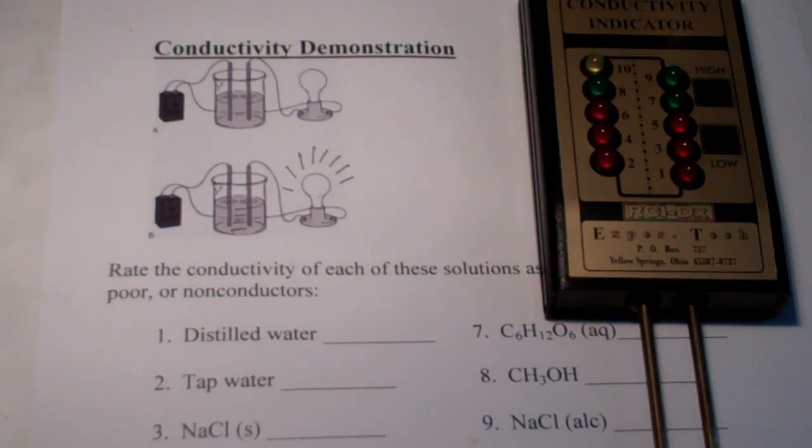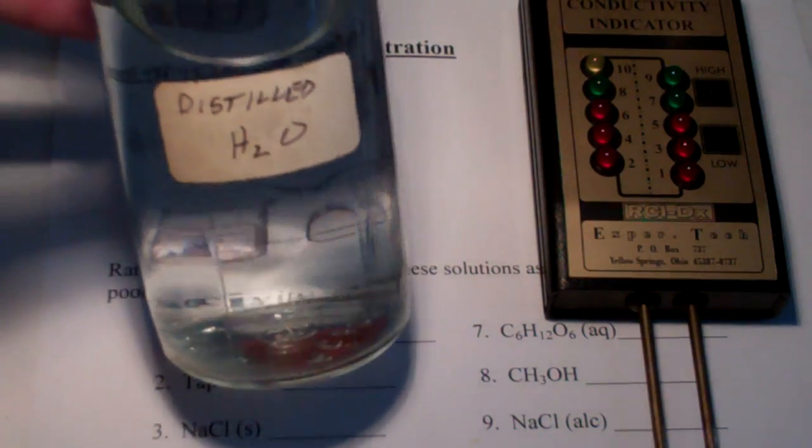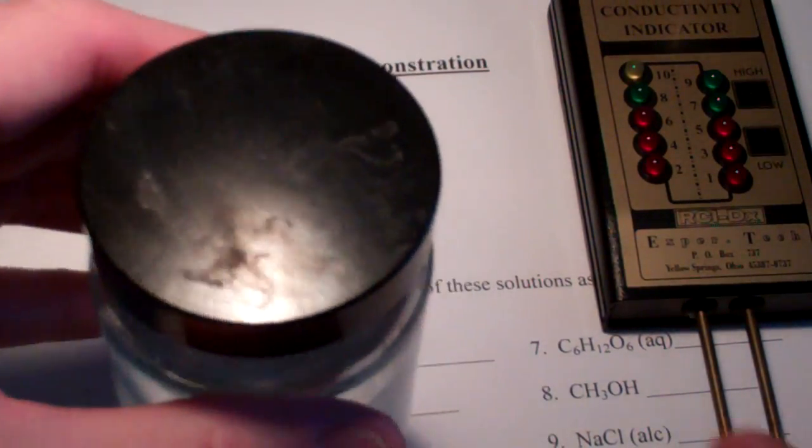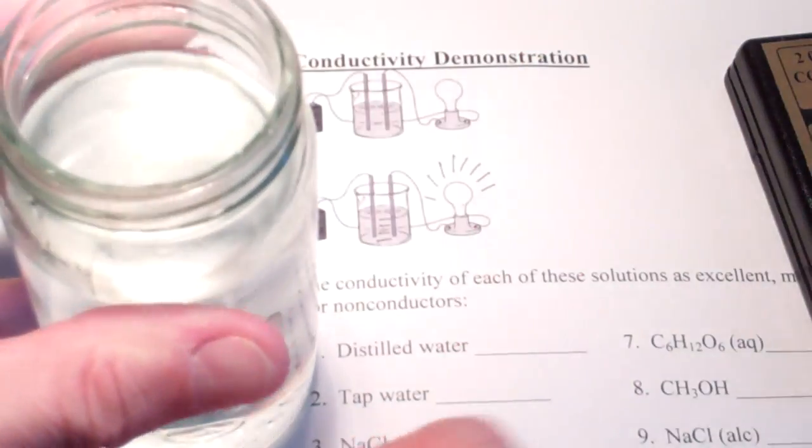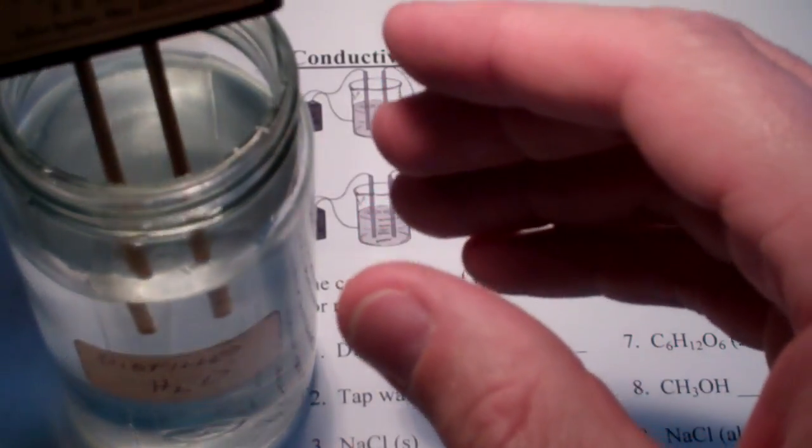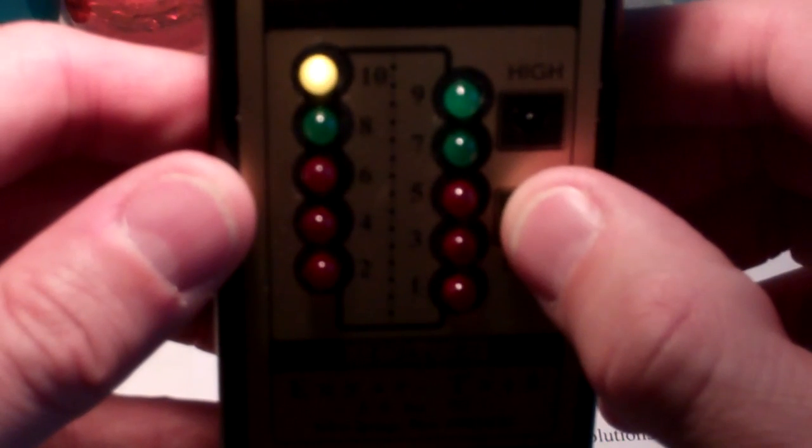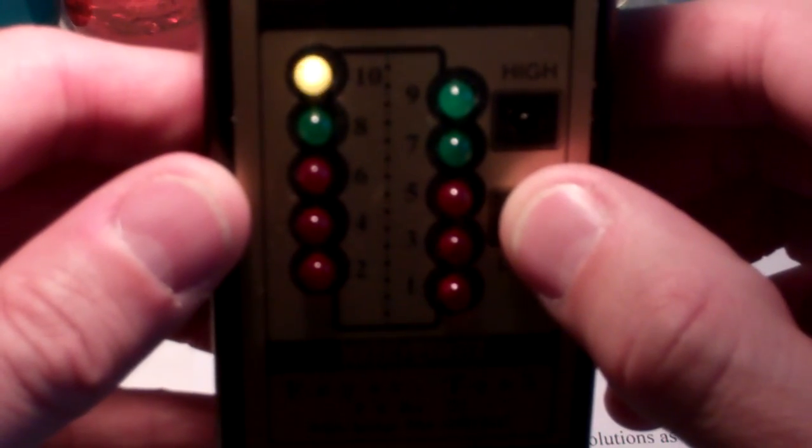So, let's start with distilled water. I have a jar of distilled water here, and we'll crack the lid. Hopefully, we won't make too much of a mess here. And we'll place our conductivity meter in the distilled water, and I will press, to begin with, the low button. And, oh, it says ten plus.